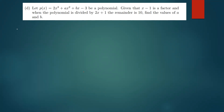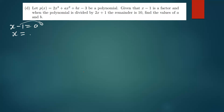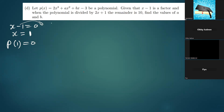We're given the polynomial p(x). Since x - 1 is a factor, when we equate x - 1 to zero we get x = 1. This means p(1) = 0, because that's what it means for x - 1 to be a factor. So we are going to find p(1).